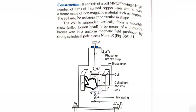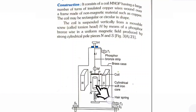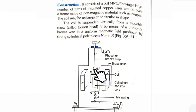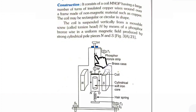The radial field is produced by the radial poles of the magnet, and the cylindrical soft iron core also makes the field radial. The purpose of making the field radial is so that the coil experiences a uniform magnetic field. This coil is suspended from a rigid support with the help of a phosphor bronze wire.